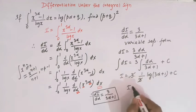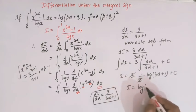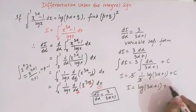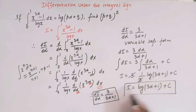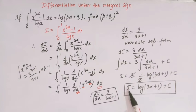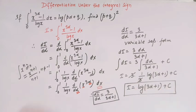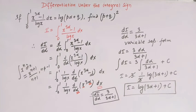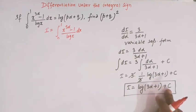The 3 and 1/3 cancel, so I equals log of (3α+1) plus C. We have obtained the general value of this integral I as log(3α+1) + C, where C is the constant of integration. To find C, we need to apply some initial or boundary conditions.